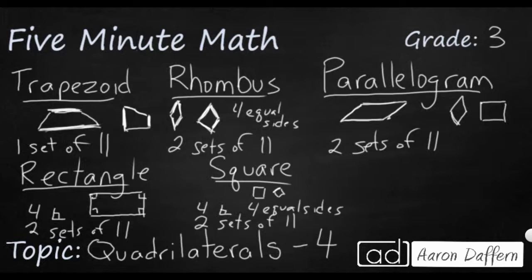So two sets of parallel sides. Well, that means that square could also be a parallelogram, because it's got two sets of parallel sides. And that also means a square can be a rhombus. A square is a special type of rhombus, because it has four equal sides. And we can also say a square is a special type of rectangle, because it has four square corners.